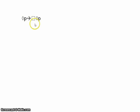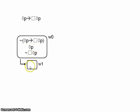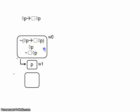Consider this argument with no premises: if possibly P, then necessarily possibly P. We draw our world and assume the negation of our argument. This is a false conditional, so we have a true antecedent and a false consequent. We can open up a new world with possibly P, from which we derive P. Nothing more we can do there.